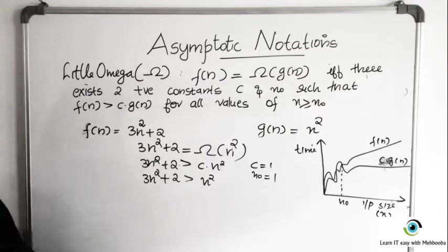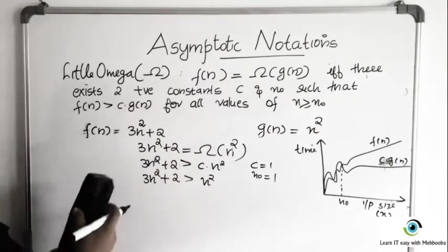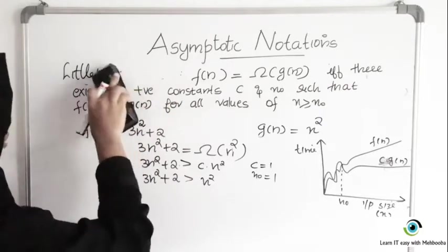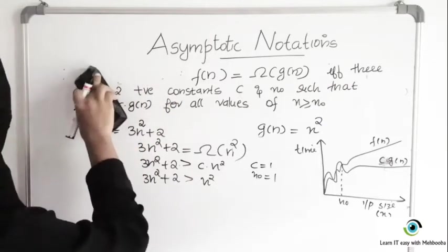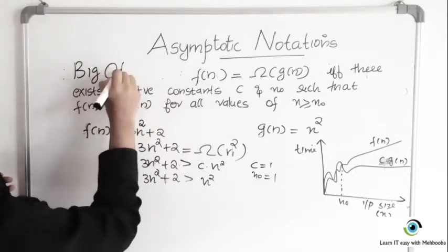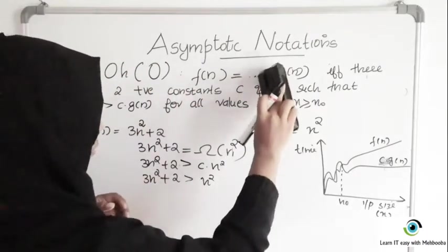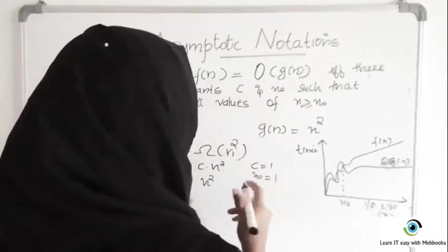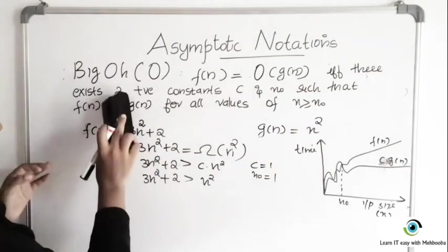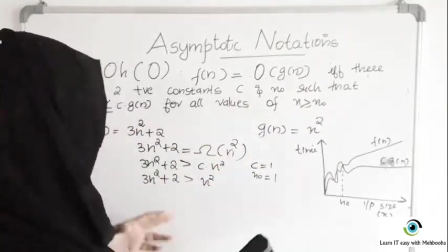Now we will see Big O. Making the changes to the definition: F of N equals Big O of G of N if there exist two positive constants C and N0 such that F of N is less than or equal to C times G of N, for all values of N greater than some N0. I am taking F of N as 3N square plus 2 and G of N as N square.